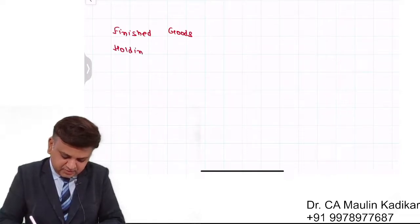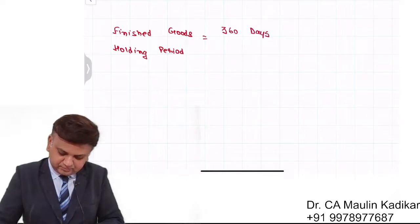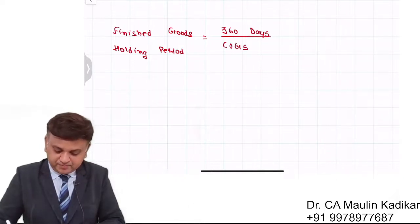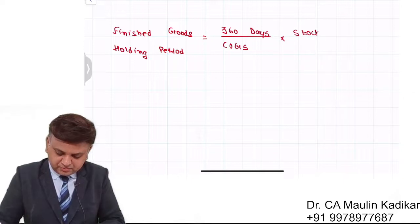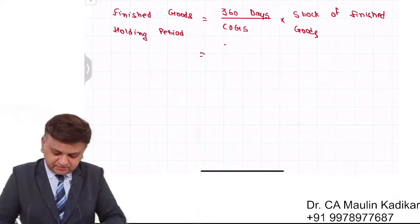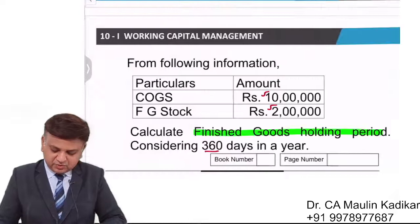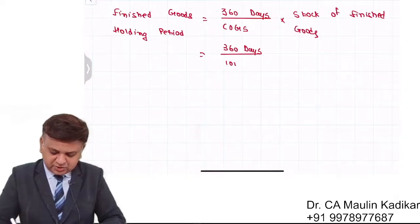Finished goods holding period. It is calculated as 360 days divided by COGS cost of goods sold into stock of finished goods. So, it is 360 days divided by COGS. It is an amount of 10 lakhs and finished goods stock is 2 lakhs.